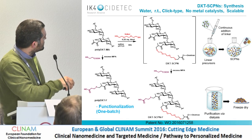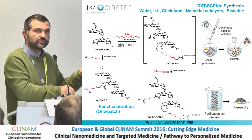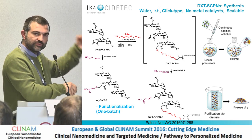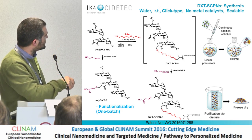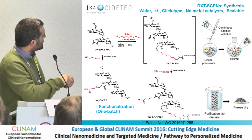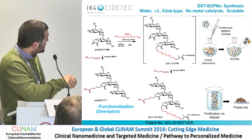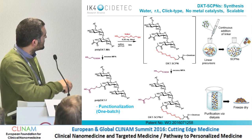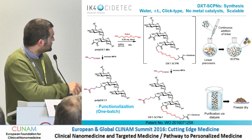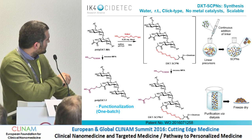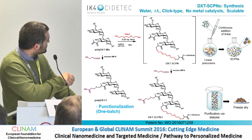The continuous addition allows us to keep the linker temporarily in dilute conditions so it reacts intramolecularly. We follow the reaction to avoid inter-saccharide linking and obtain only the intramolecular compound. We isolated this compound to characterize it and confirm we have single chain nanoparticles. We can also carry out, in a one-batch reaction, further functionalization — for example with mercaptopropionic acid.